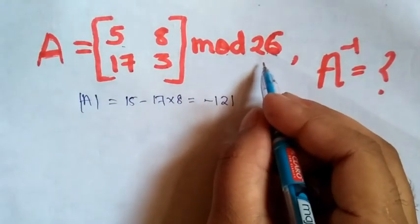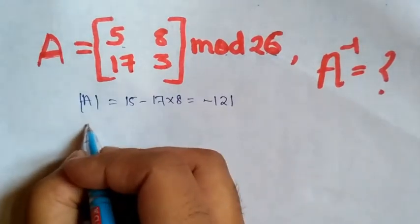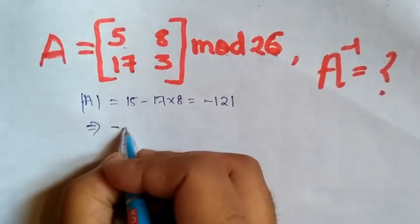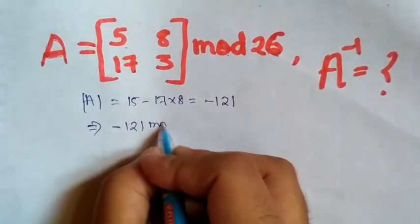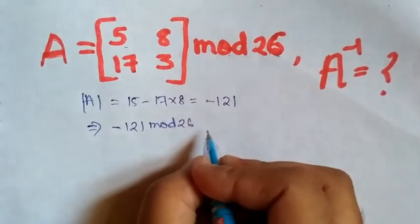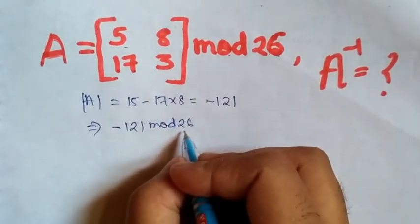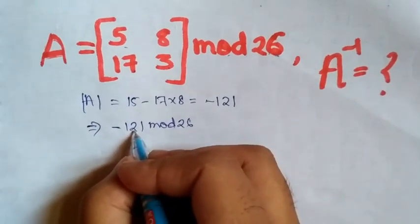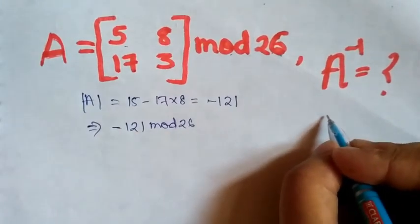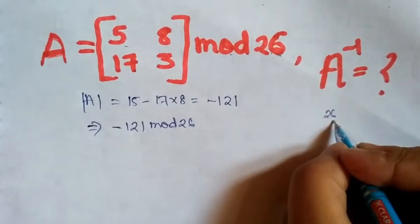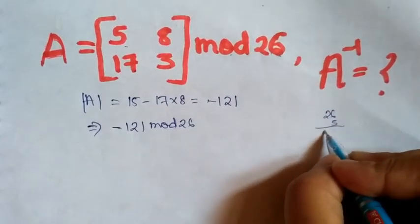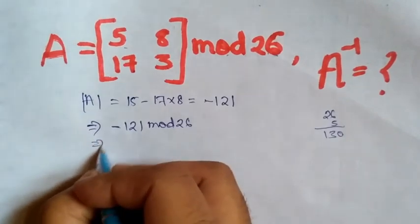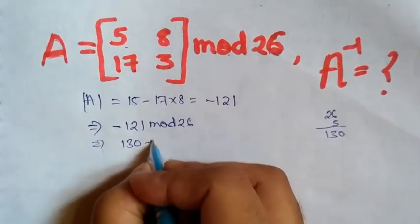We have to convert this to mod 26. So minus 121 mod 26, we multiply 26 with any number which is closest to 121. Let's see, 26 into 5 which is 130, so 130 minus 121 mod 26 which is 9 mod 26.